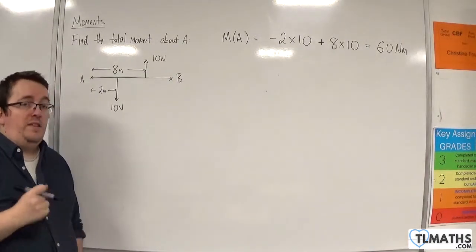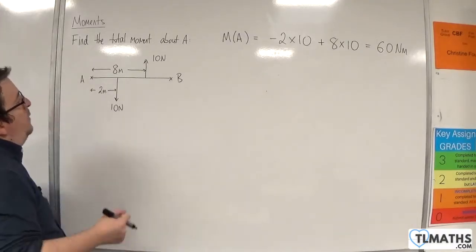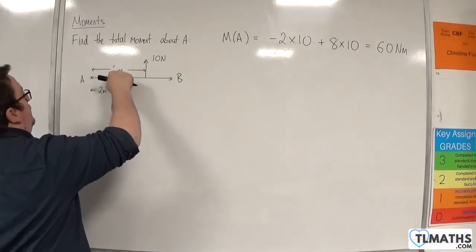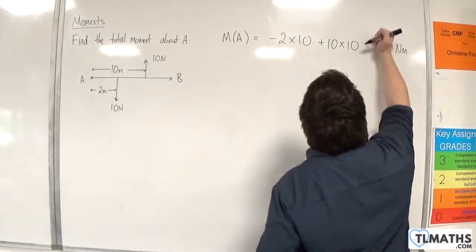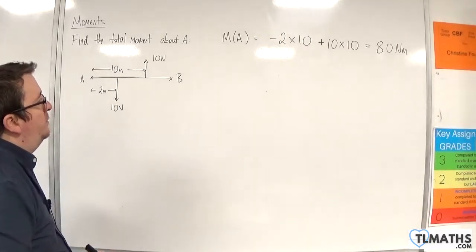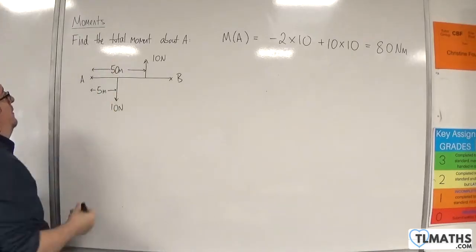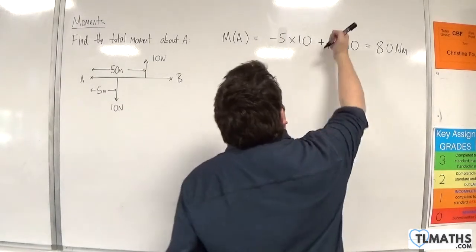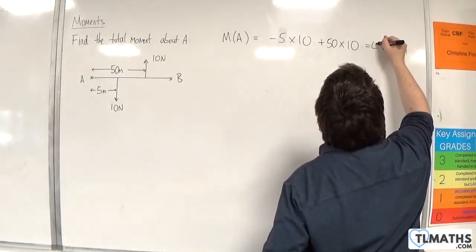Now, what I want you to think about is, as we do this, can you spot a pattern and see if we could have come to that answer quickly? So we did have 40 Newton metres in the first example, and now it's 60 Newton metres. Let's change this to 10 metres, so that would change this to 10, and that would change that to 80. Let's change this to 5 metres, and this to 50 metres. So that would be minus 5 times 10 plus 50 times 10, and so that would be 450 Newton metres.